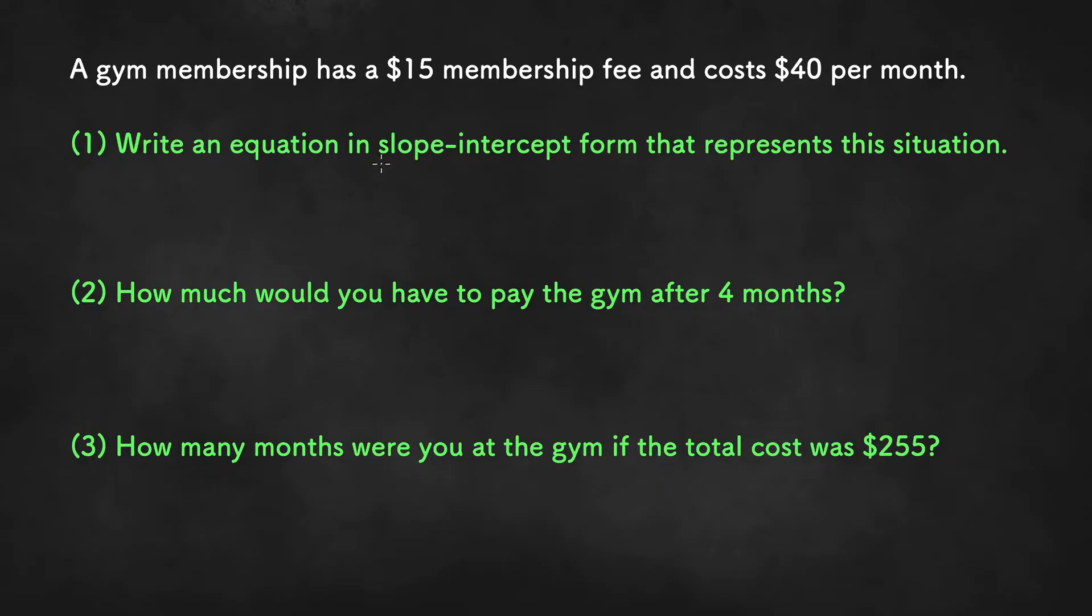So slope-intercept form is y equals mx plus b. What we need to do is plug in the two numbers from the word problem into the equation for m and b. In order to do that, we need to know which number we need to plug in for which variable.